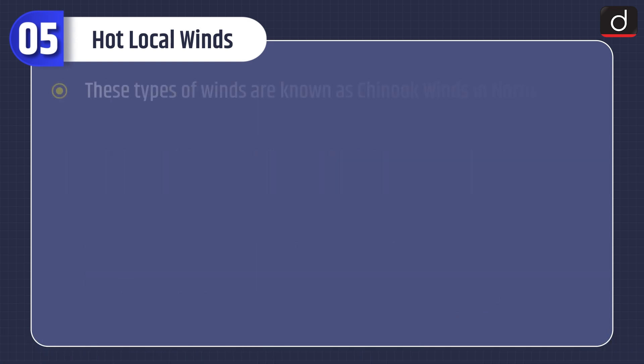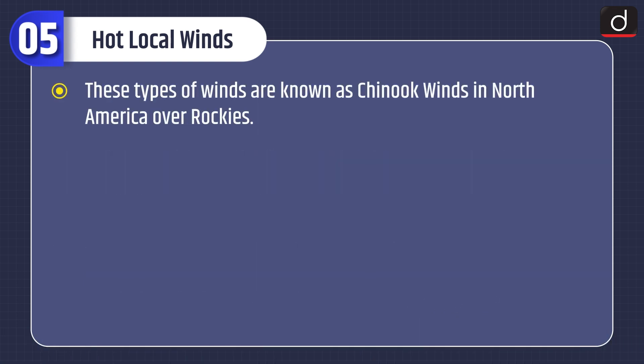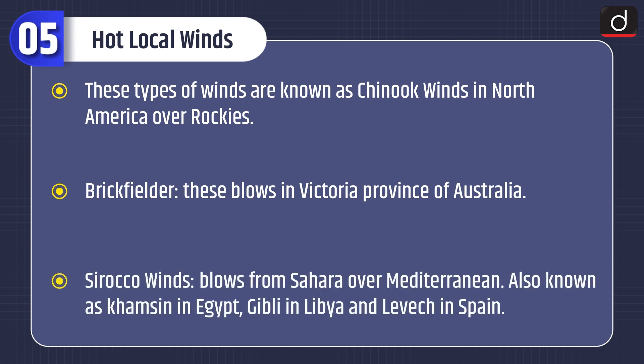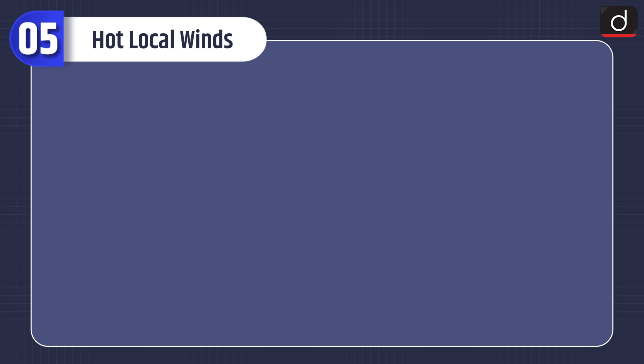These types of winds are known as Chinook winds in North America over the Rockies. Brickfielder blows in Victoria province of Australia. Sirocco winds blow from the Sahara over the Mediterranean, also known as Khamsin in Egypt, Ghibli in Libya, and Levche in Spain.